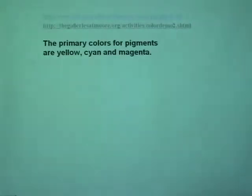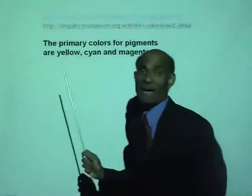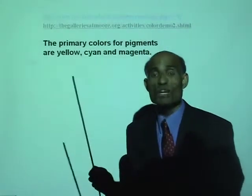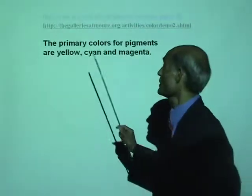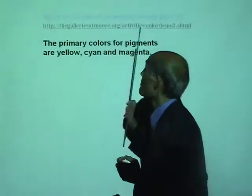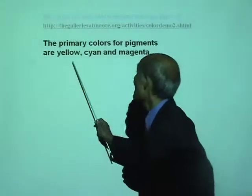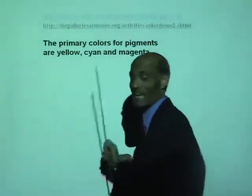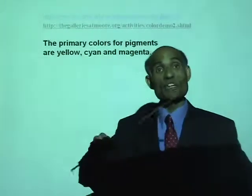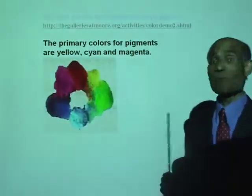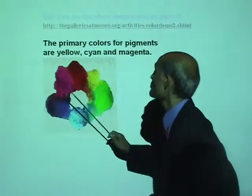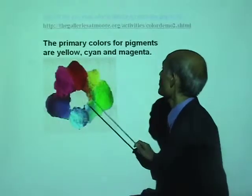What I have shown you so far is only for pure colors. The primary colors for pigments are yellow, cyan, and magenta. So for pigments it is exactly opposite — these are the primary colors for pigments.